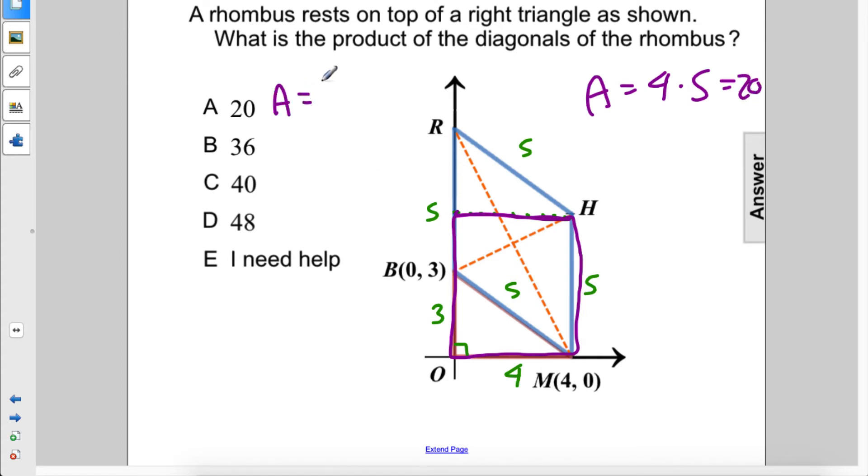Now, the area formula for a rhombus is one-half d1 times d2. We're asked what the product of the diagonals is, so this is what we're being asked to figure out.